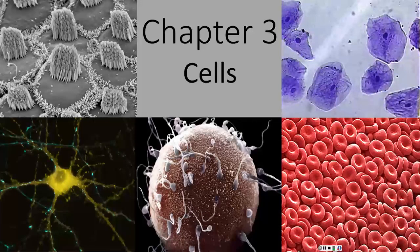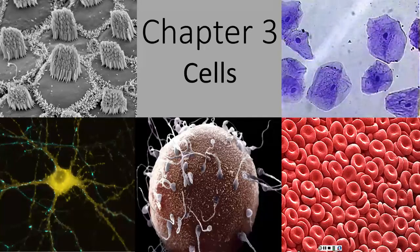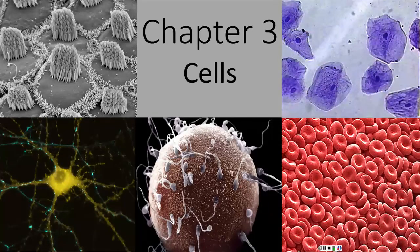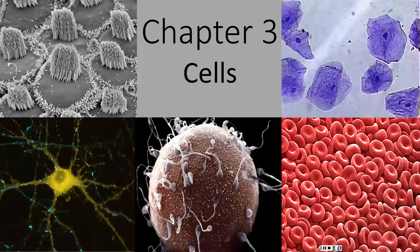Hello, everyone. Welcome to the first lecture of Unit 2. We've now moved past all of the material that was going to be on Exam 1, and starting with Chapter 3, we're going to start working on material for Exam 2. Exam 2, which covers Unit 2, will focus on Chapters 3 and 4, both of which deal with the cell and cell activity. Chapter 26, which also deals with a very specific type of cell activity, metabolism and cellular respiration. And Chapter 5, which is going to focus on tissues.